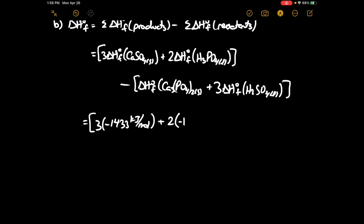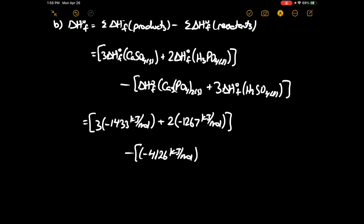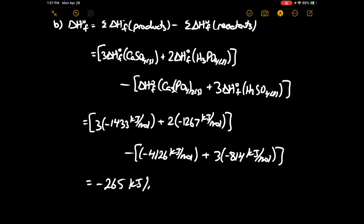Plus 2 times minus 1267, minus minus 4126, which gives negative 814, and this works out to negative 265 kJ/mol for the enthalpy of formation in Part B.